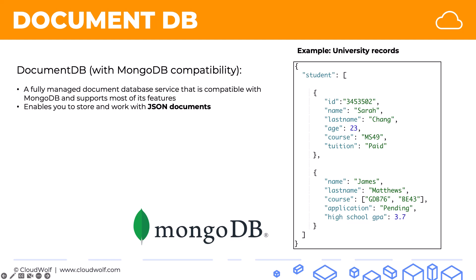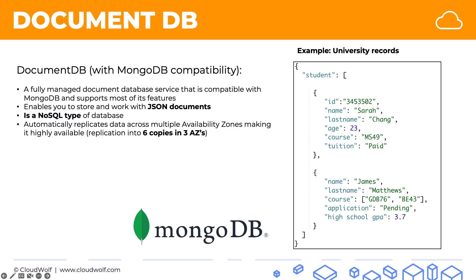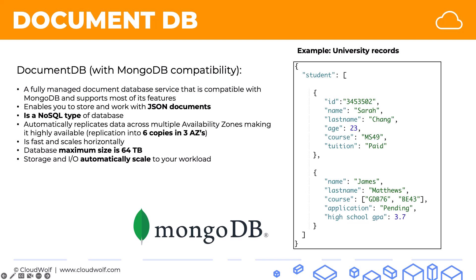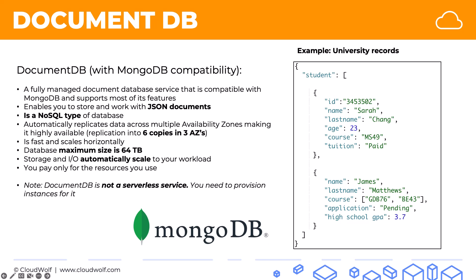As we've discussed, DocumentDB enables you to store and work with JSON documents. It's a NoSQL type of database — important to remember that. It automatically replicates data across multiple AZs, so it's highly available, with six copies in three different AZs. It's fast and it scales horizontally. The database maximum size is 64 terabytes. The storage and I/O automatically scale to your workload. You only pay for the resources that you use, and note that DocumentDB is not a serverless service — you do need to provision instances for it.